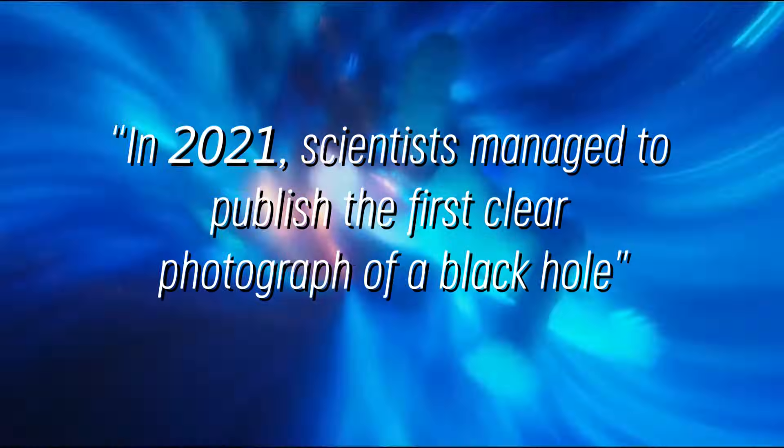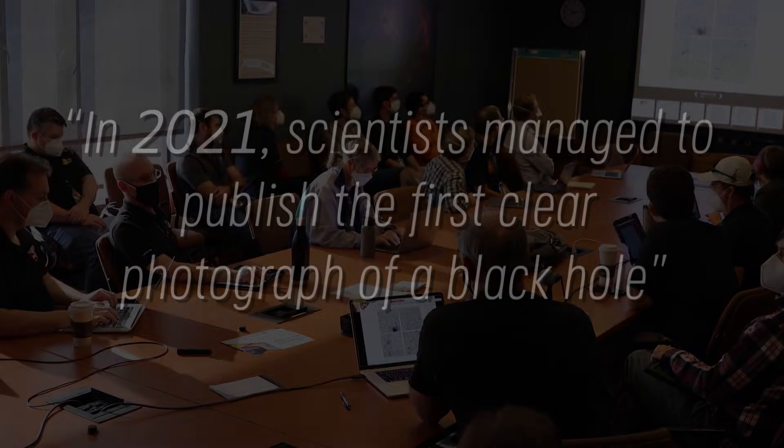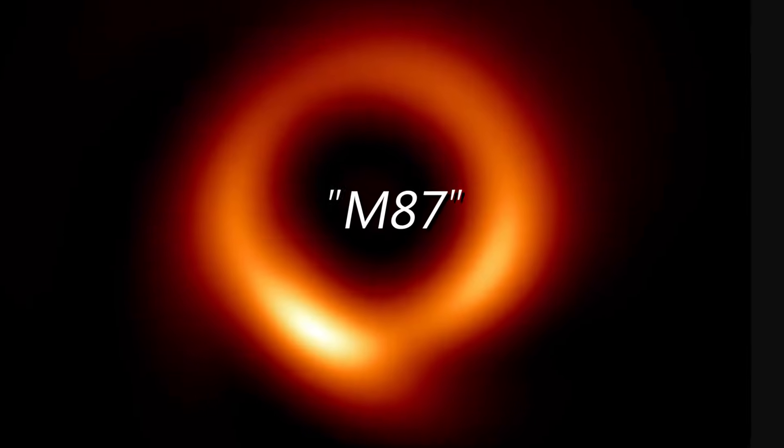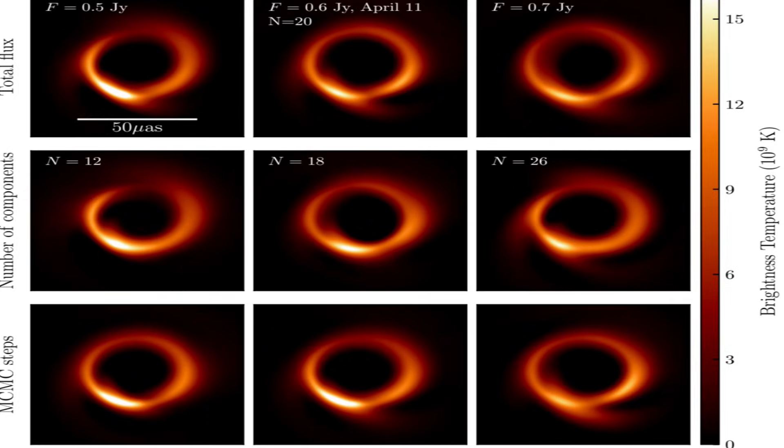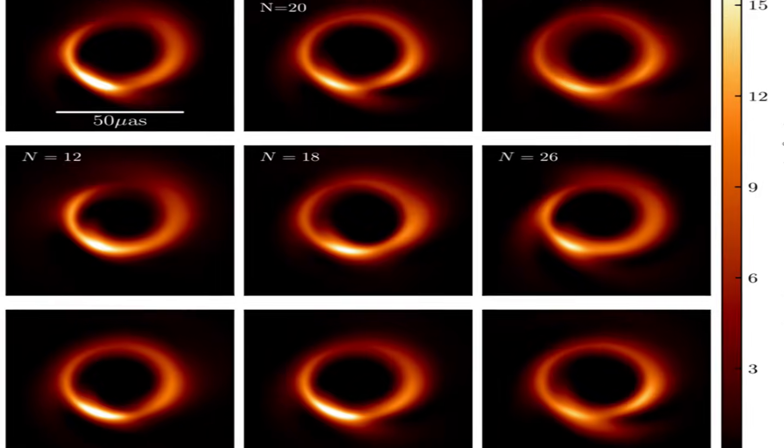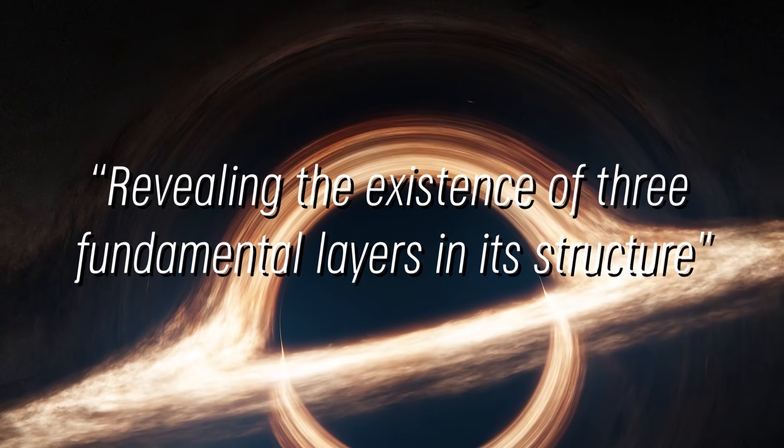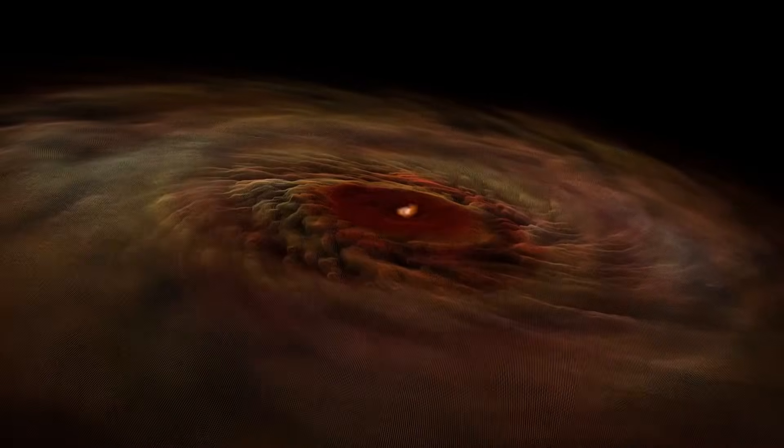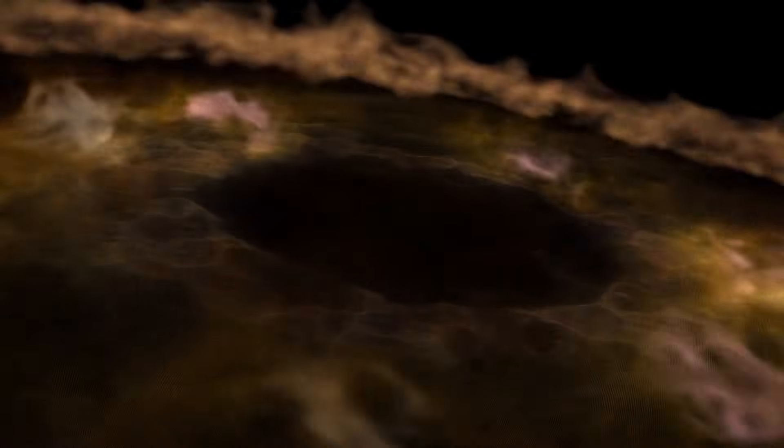In 2021, scientists managed to publish the first clear photograph of a black hole, specifically the black hole M87. The black hole was photographed for several nights in a row, and with each image, researchers collected more and more evidence about it, revealing the existence of three fundamental layers in its structure. That's right, a black hole is not just a lone hole in the void. To delve into the depths of its mystery, you need to understand the first two layers. Let's break it down.